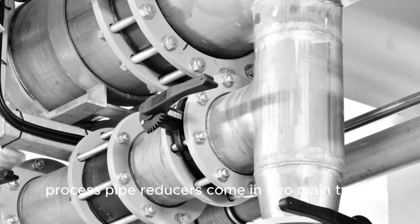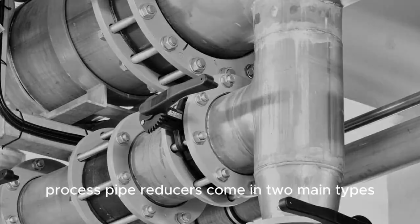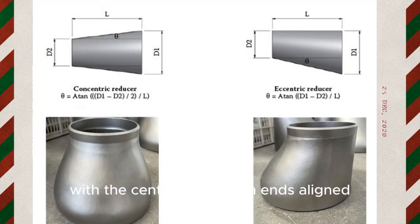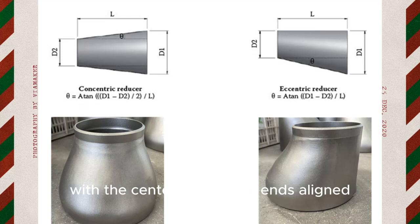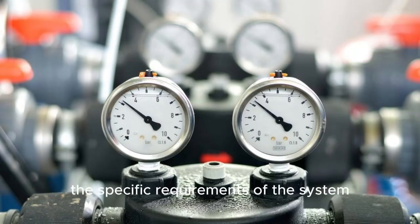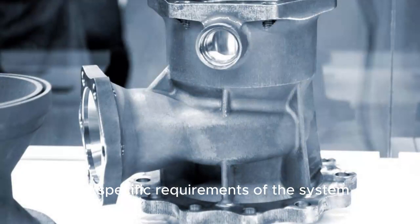Process pipe reducers come in two main types: concentric and eccentric. A concentric reducer is symmetrical, with the centerline of both ends aligned. An eccentric reducer, on the other hand, has an offset centerline, resulting in an uneven transition. The choice between the two depends on the specific requirements of the system.